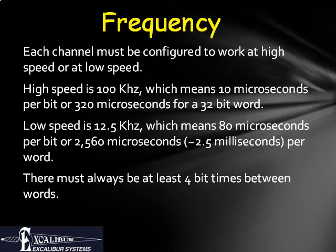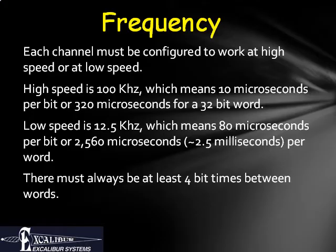ARINC 429 allows two speeds to be used. On any given wire, only one speed may be used. The transmitter and receiver must both be programmed to use the same speed. The two possible speeds are 100 kilohertz or 12.5 kilohertz. At high speed, there must be a minimum gap of at least 40 microseconds between words transmitted on the bus. At low speed, there must be a minimum of 320 microseconds between words.